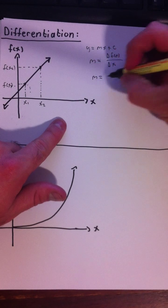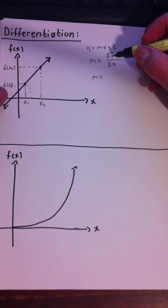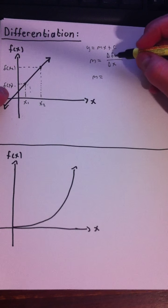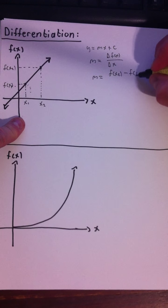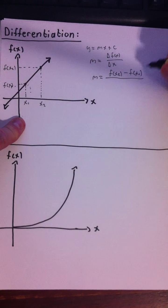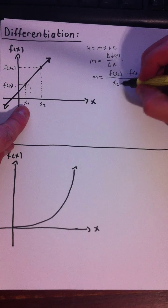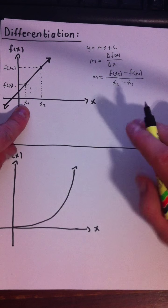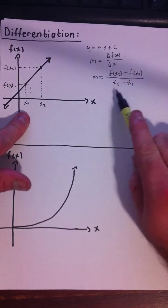So that tells us that the distance between these two, f of x2 minus f of x1 would be the change in your y value. So we'll go f of x2 minus f of x1 divided by the change in x, which is x2 minus x1. So that's your gradient for this function, and that'll be true anywhere on this line.